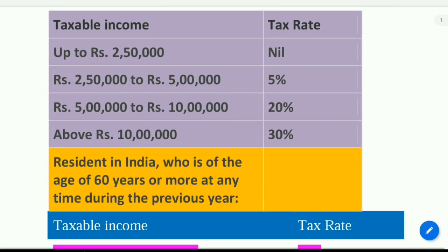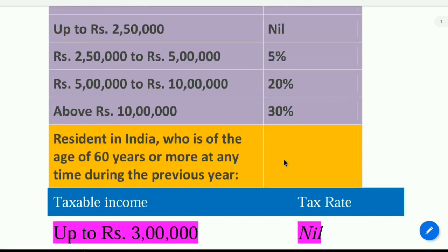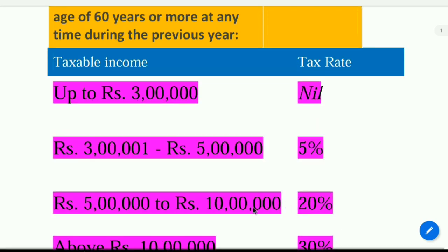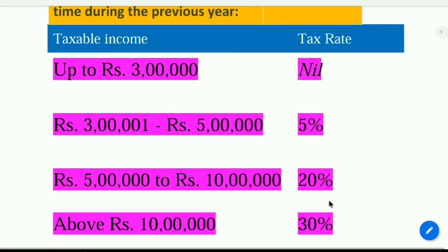Taxable income up to Rs. 2,50,000 — tax rate is nil. Rs. 2,50,000 to Rs. 5,00,000 — tax rate is 5%. Rs. 5,00,000 to Rs. 10,00,000 — it is 20%. Above Rs. 10,00,000 — it is 30%. If the resident is above 60 years, up to Rs. 3,00,000 the tax rate is nil; Rs. 3,00,000 to Rs. 5,00,000 — 5%; Rs. 5,00,000 to Rs. 10,00,000 — 20%; above Rs. 10,00,000 — 30%.